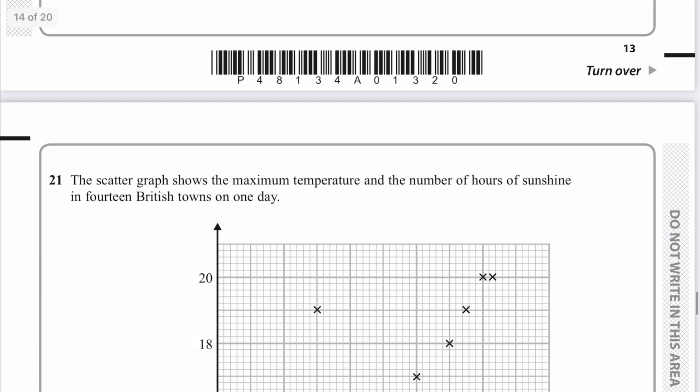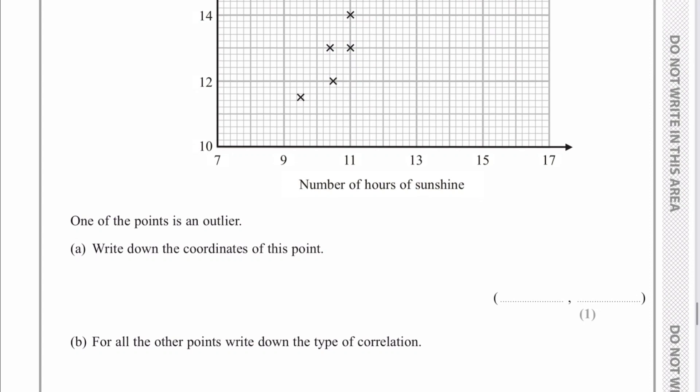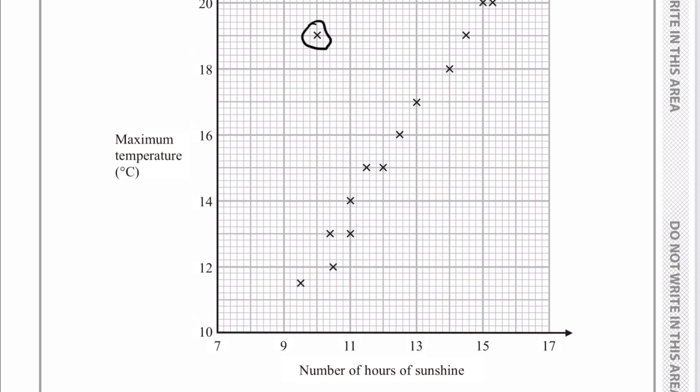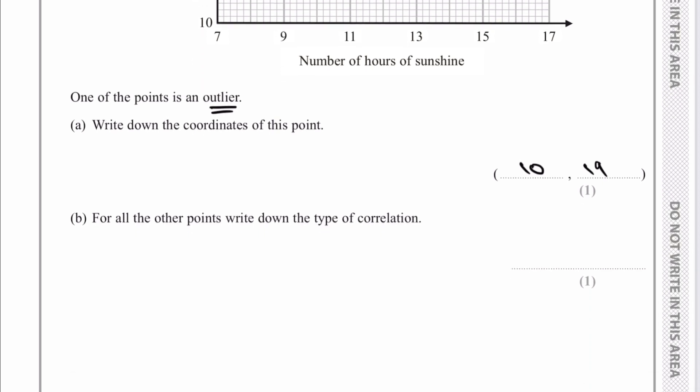Let's move on then to question number 21, which is a scatter graph. Now, every time I see a scatter graph, I'm always going to be drawing in the line of best fit. Let's have a look at the first question, which is one of the points is an outlier right down the coordinates of this point. Well, the outlier is the one that doesn't fit in with the line of best fit. Now, if we look at the graph itself, it's actually going to be this point here. And the coordinates of that particular point along the corridor 10 and up the stairs is going to be 19. So therefore, the outlier would be 10, 19. And then for all the other points, write down the type of correlation. So what we mean by that is, is it a positive? In other words, does it go in the positive direction, which it does, or does it go in the negative direction? If you're not sure about any of these questions, please do add a comment and I'll put you a note of a playlist.